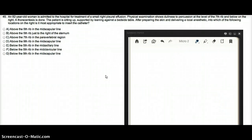This question deals with an 82-year-old woman admitted to the hospital for treatment of a small right pleural effusion. Physical exam shows dullness to percussion at the level of 7th rib and below on the right. A thoracentesis is done. The patient is sitting up, supported by leaning against a bedside table. After preparing the skin and delivering a local anesthetic, into which of the following locations on the right is most appropriate to insert the catheter?